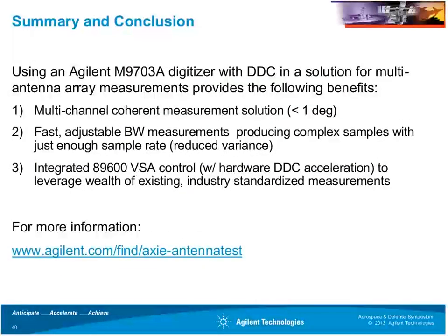In summary, the Agilent M9703A digitizer with the digital down converter option provides a multi-channel phase-coherent measurement solution with fast, adjustable bandwidth measurement that optimizes capture duration and minimizes data required for post-processing. With integrated 89600 VSA control, it brings the wealth of existing industry-standardized measurements to this platform. For further information, visit the link provided, which has marketing collateral for intended measurements.